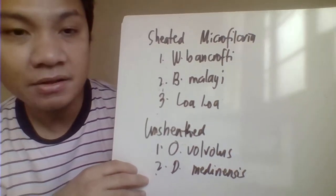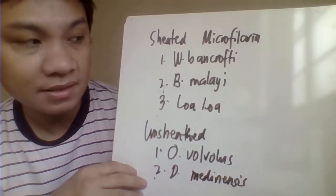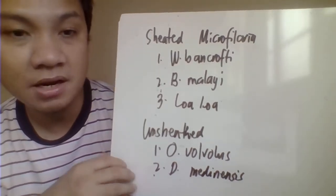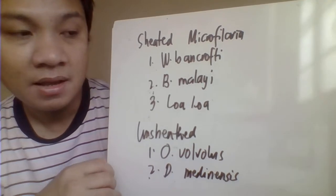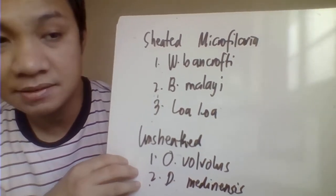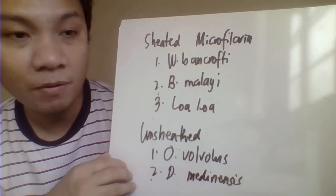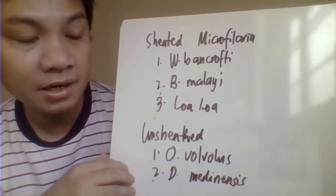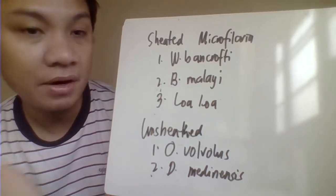Brugia malayi also inhabits the lymphatic vessels, but the adult worm is found in lymphatic vessels above the diaphragm, and the microfilaria can be found in the bloodstream. Loa loa can inhabit the bloodstream, while the adult worm can be found in subcutaneous tissues and in the eyes.